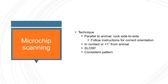Regarding technique — when scanning, hold the scanner parallel to the animal and gently rock it side to side. Keep it right in contact or less than an inch from the animal. Go slowly — that's probably the biggest mistake I see. People try to scan in two seconds and that's likely how most chips get missed. Use a consistent pattern every time so you're less likely to miss things.